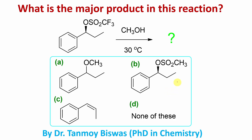I believe you have tried, so I'll start. What is the major product of this reaction? It is actually a trifluoromethane sulfonic acid ester. You can consider the reaction with methanol at approximately 25°C, which is room temperature — not a very high temperature. What is the product?